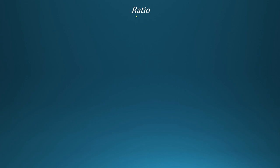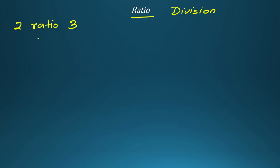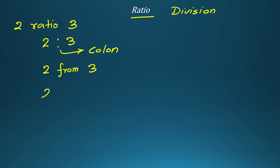First of all, we will try to understand what is the meaning of ratio. In simple language, ratio means division, or you can say 'part of.' For example, if I say 2 ratio 3, mathematically you can express this as 2 colon 3 — the double dot is called a colon. This is also read as '2 ratio 3', '2 from 3', or 'ratio of 2 to 3.' These are the 3 different ways to express a ratio.